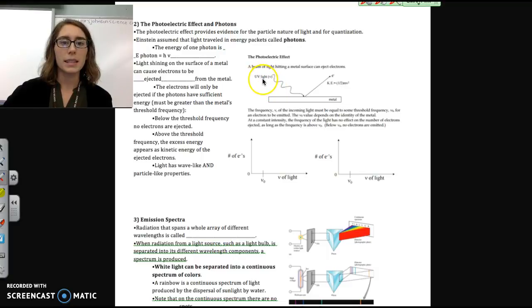So what we see, though, is that when the frequency of incoming light is not high enough, we get no ejected electrons. So it has to be greater than whatever this threshold frequency is of the metal.